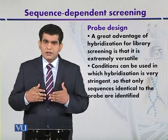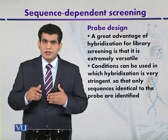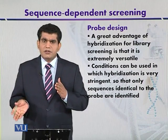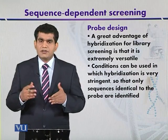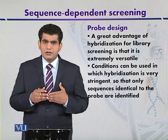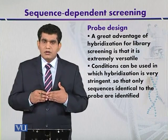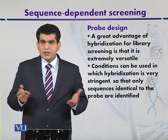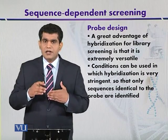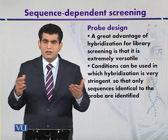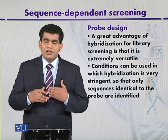Degenerate probes can also be constructed from a particular amino acid sequence. When constructing degenerate probes or DNA probes, we must consider factors such as the melting temperature, annealing temperature, and overall length of the probe. In summary, to perform in-situ hybridization, we need to develop a probe based on knowledge of the target gene sequence, or alternatively use an amino acid sequence to construct degenerate probes.